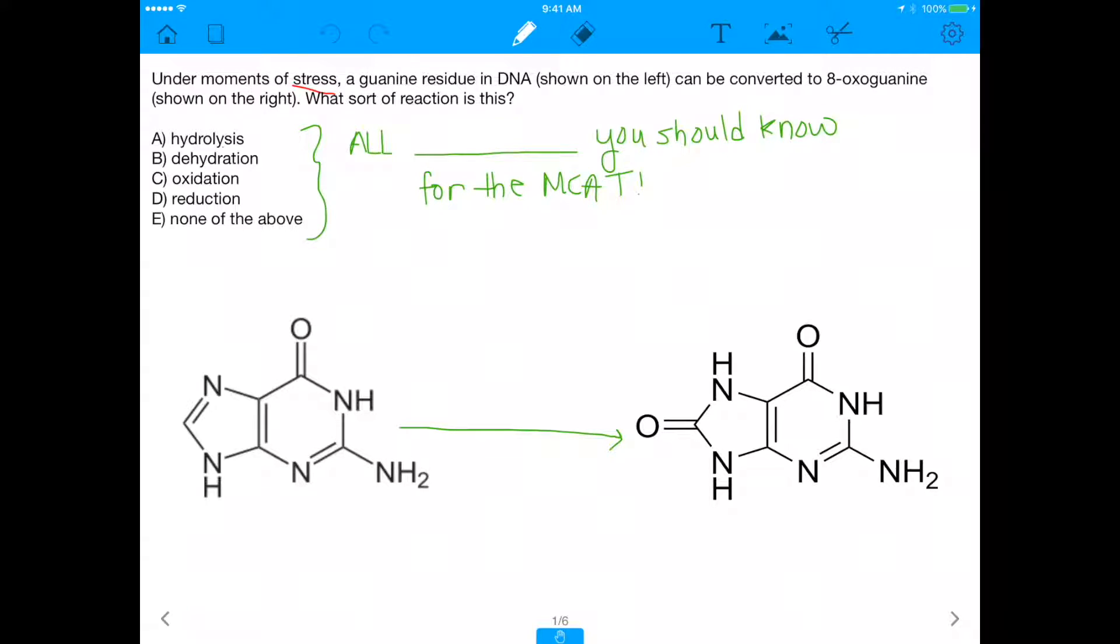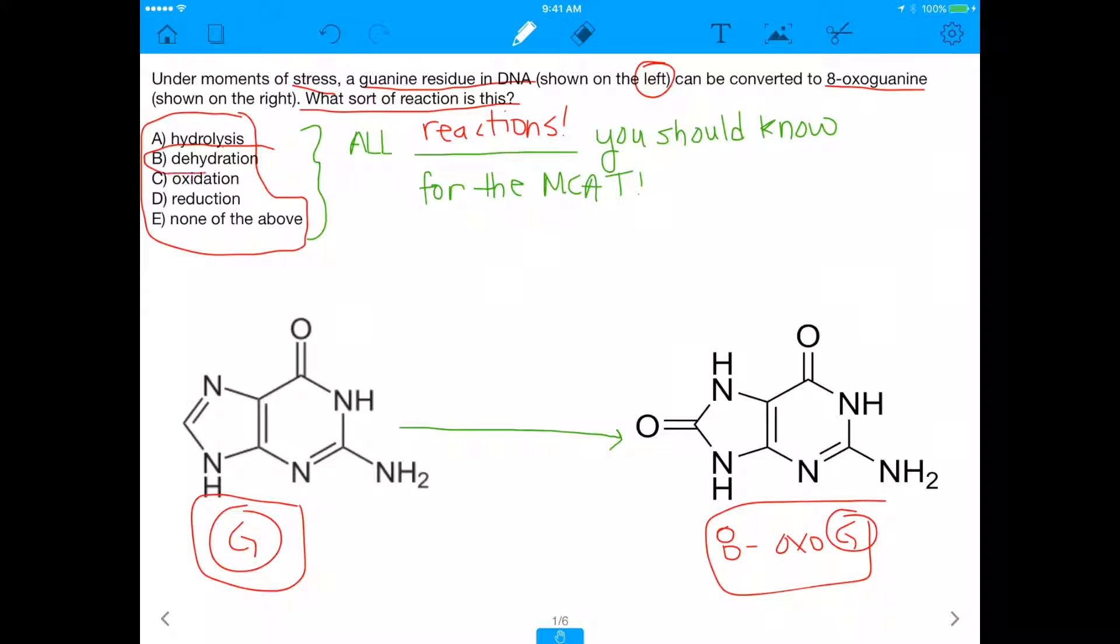It says, under moment of stress, a guanine residue in DNA, shown on the left, so this is guanine right here, can be converted to 8-oxoguanine, shown on the right. Basically, the question is asking, what sort of reaction is this? You have five answer choices. I give five just because I want to make my questions more challenging. The point of these five reactions is that these are all reactions you should know for the MCAT.